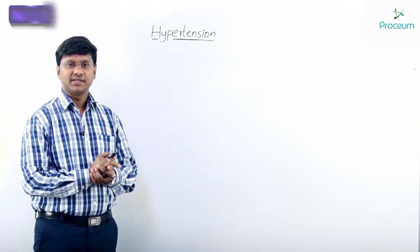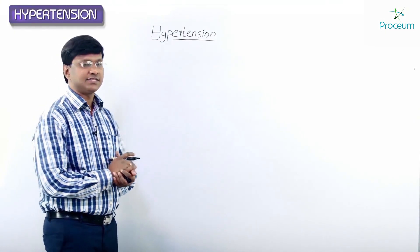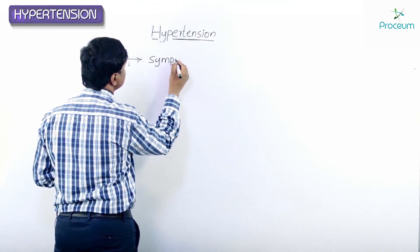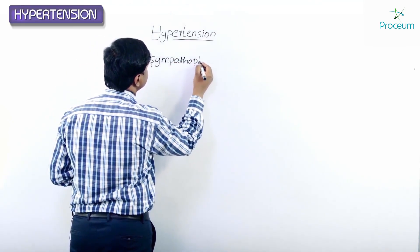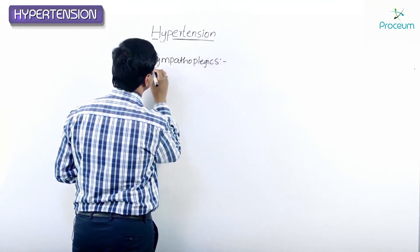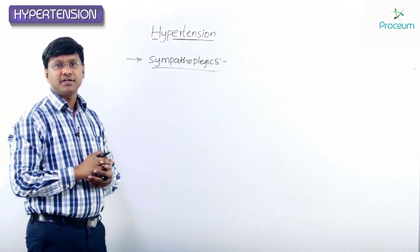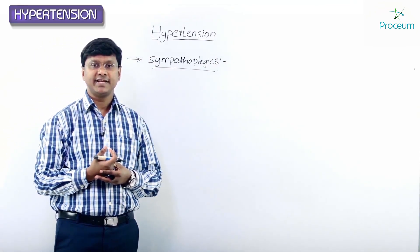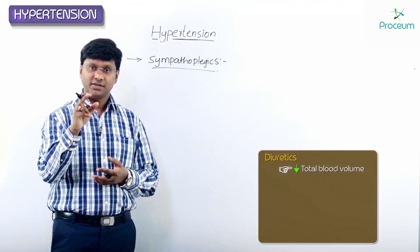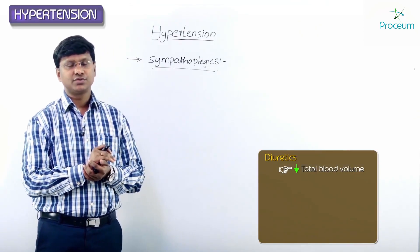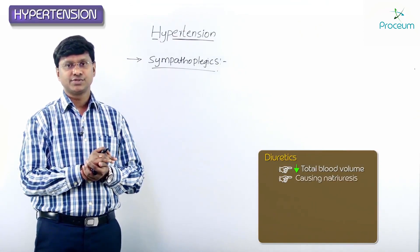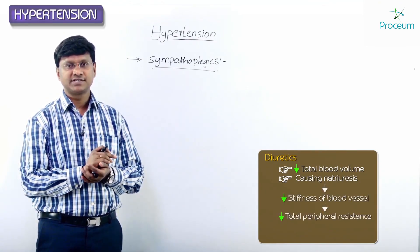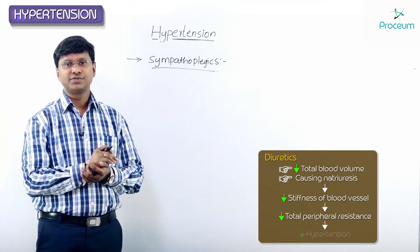Let me discuss another group of antihypertensives — sympathoplegics. Prior to this, we discussed diuretics. Diuretics were used as antihypertensives because they reduced the total blood volume and also caused natriuresis. Natriuresis reduces the stiffness of the blood vessel and thereby reduces the total peripheral resistance, which is why they are used as antihypertensives.